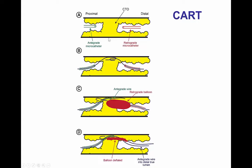This is the illustration of the CART technique. We have the proximal cap and the distal cap. Wires are advanced from both sides into the subintimal space, and then a balloon is advanced over the retrograde guide wire. The balloon is inflated, creating a space that communicates with the distal true lumen, and then an antegrade wire is advanced into the space created from the retrograde balloon. In the confluent balloon technique used in this particular case, everything is the same, with the difference that now we had two balloons — both a retrograde and an antegrade balloon — creating an even larger space and facilitating advancement of the antegrade guide wire into the distal true lumen.